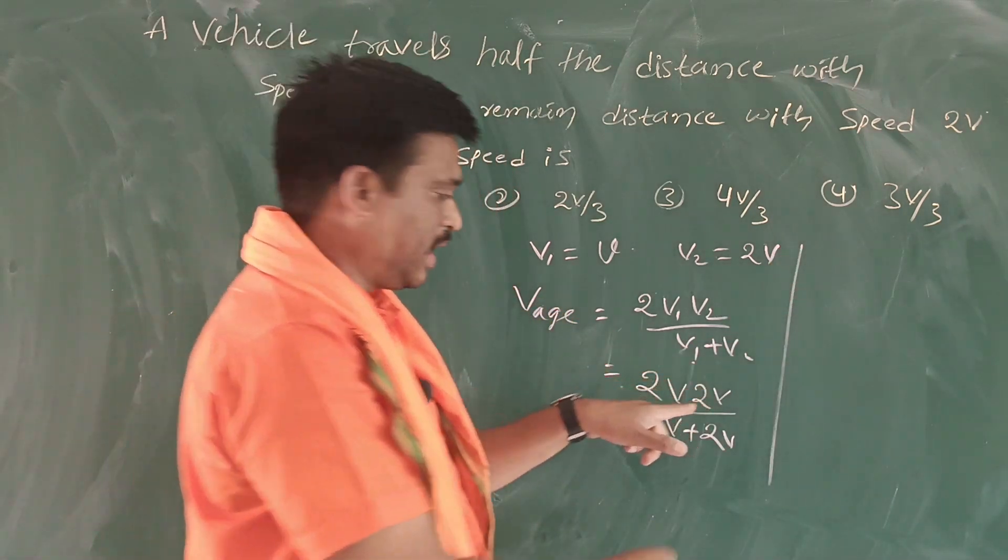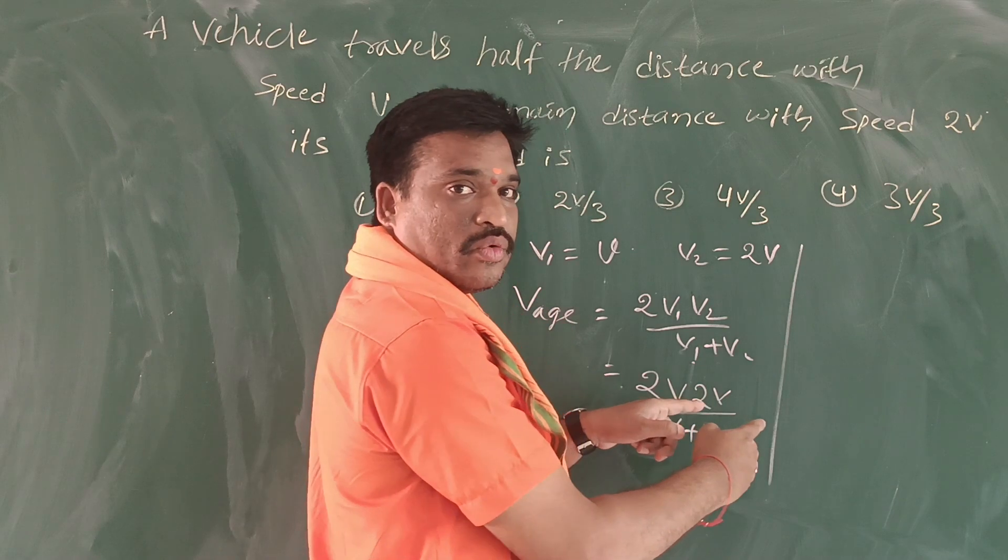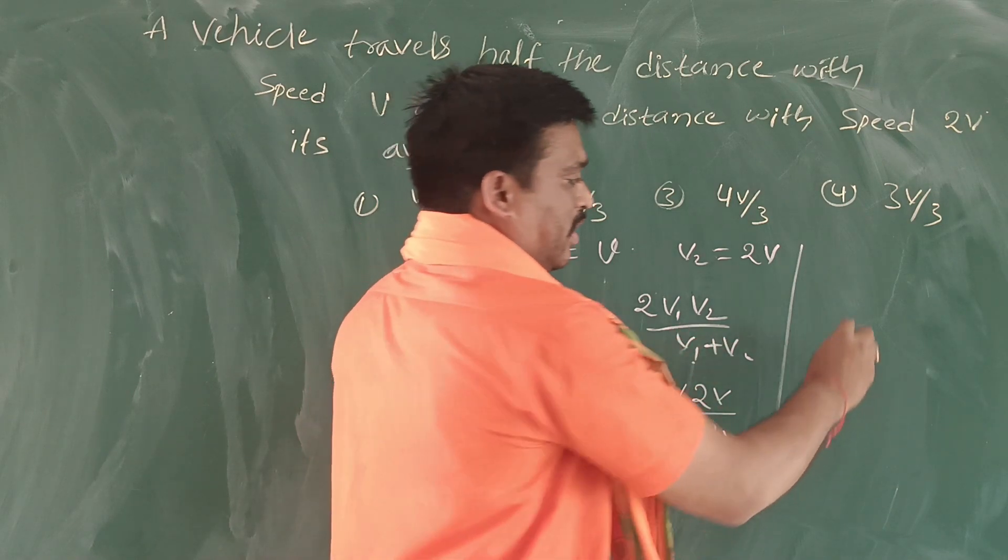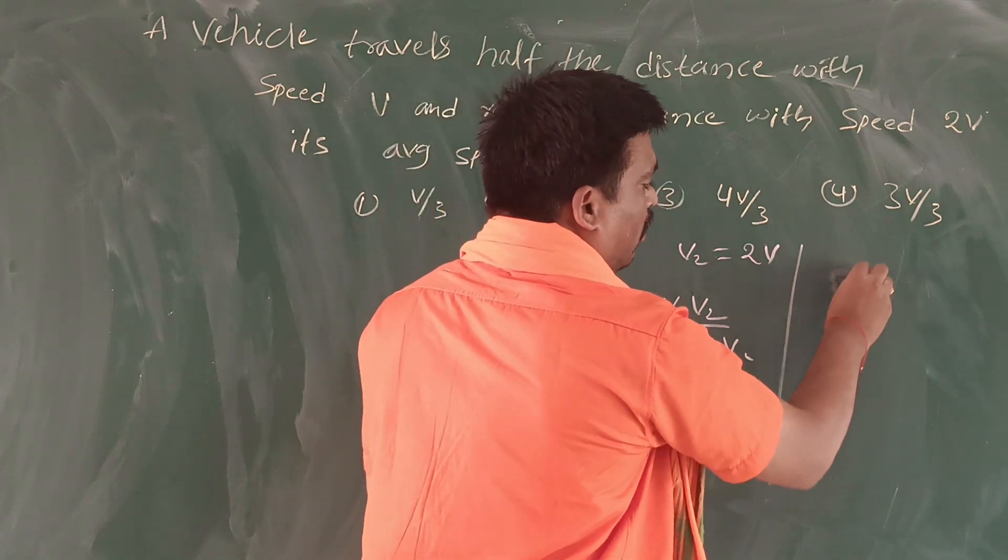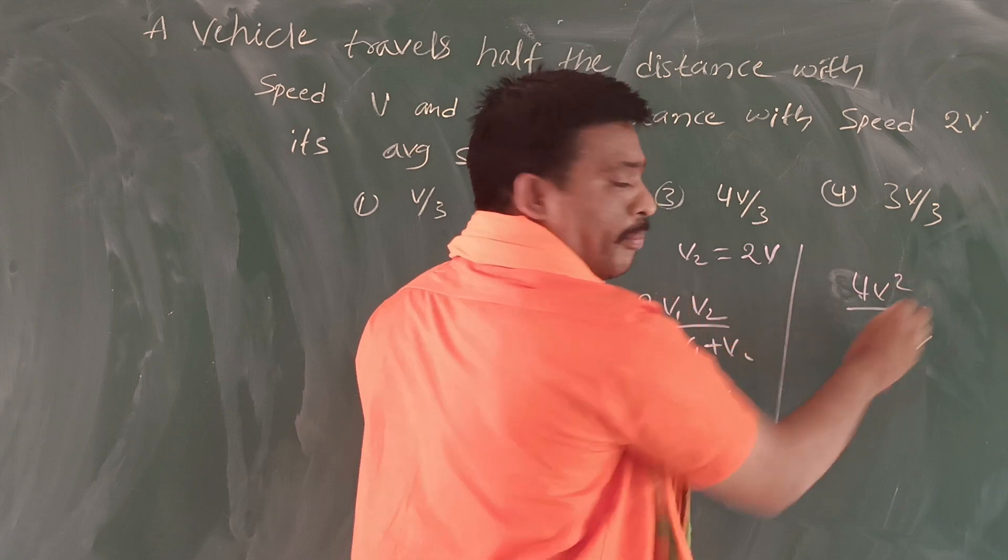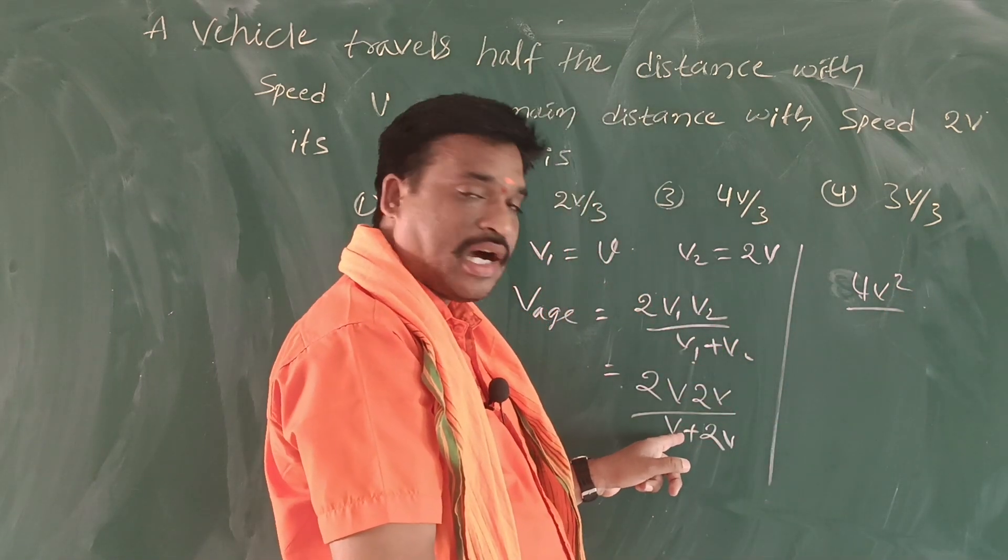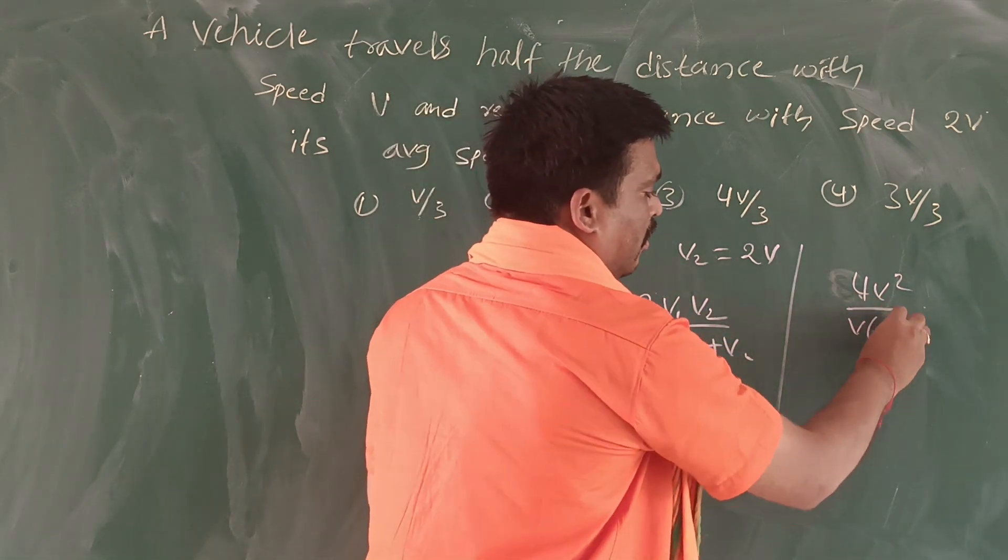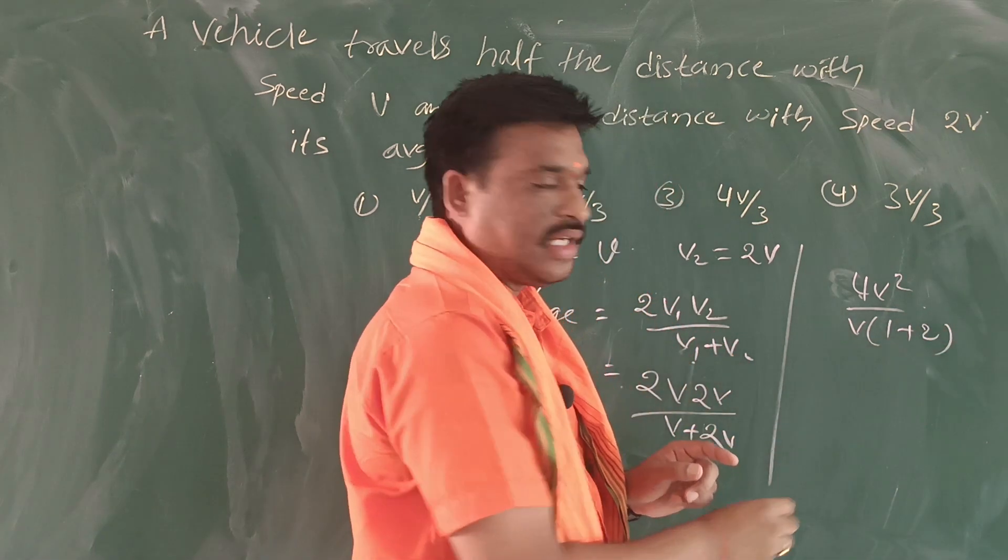2v times 2v equals 4v squared. 4v squared divided by, take common v, 1 plus 2.